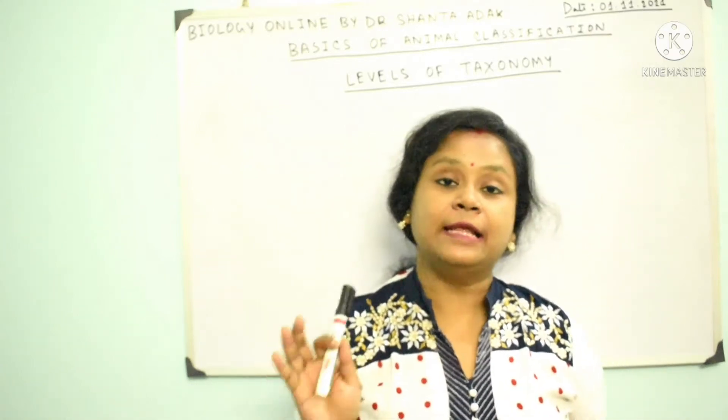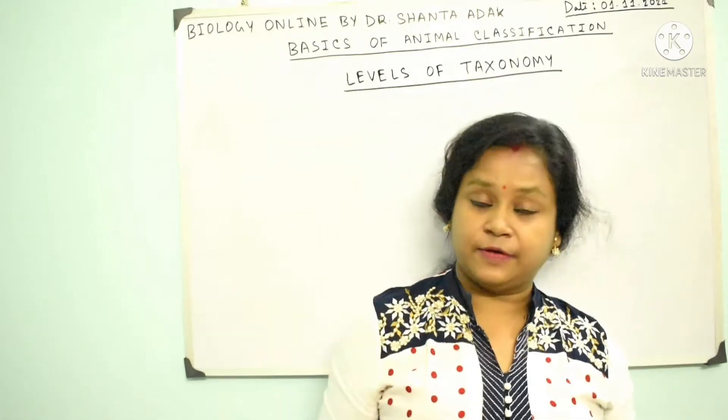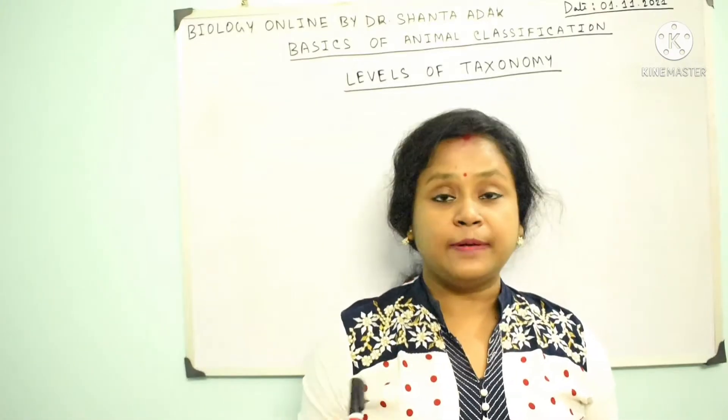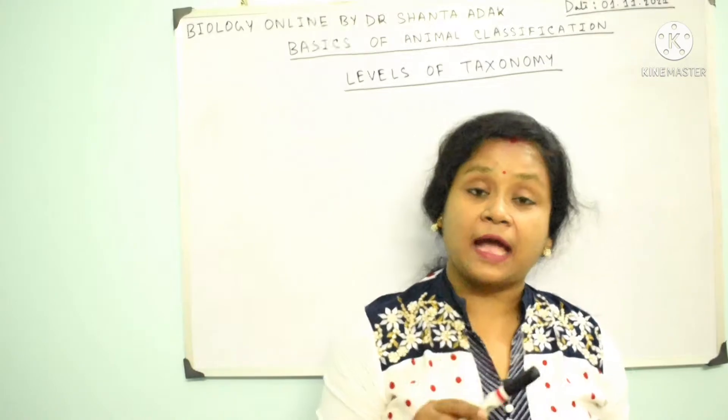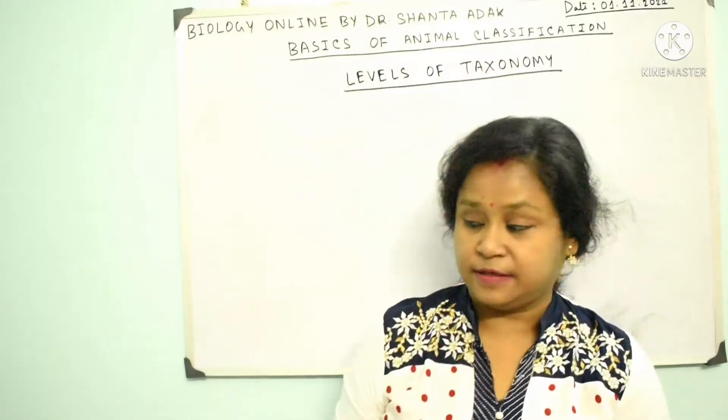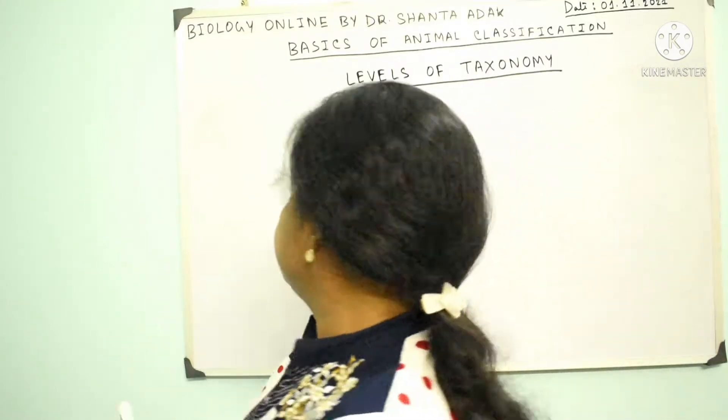There are three levels of taxonomy: alpha taxonomy, beta taxonomy, and gamma taxonomy.